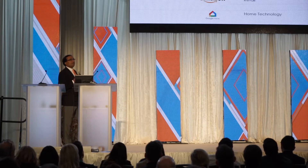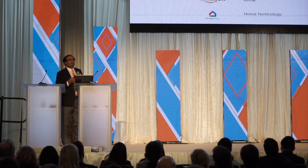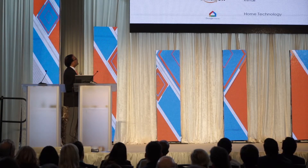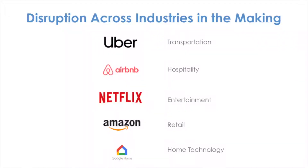In the digital revolution, every industry is up for disruption. Everybody knows the standard use cases: Uber and what it has done to transportation, Airbnb to hospitality, Netflix to entertainment, Amazon to retail, and Google for home.